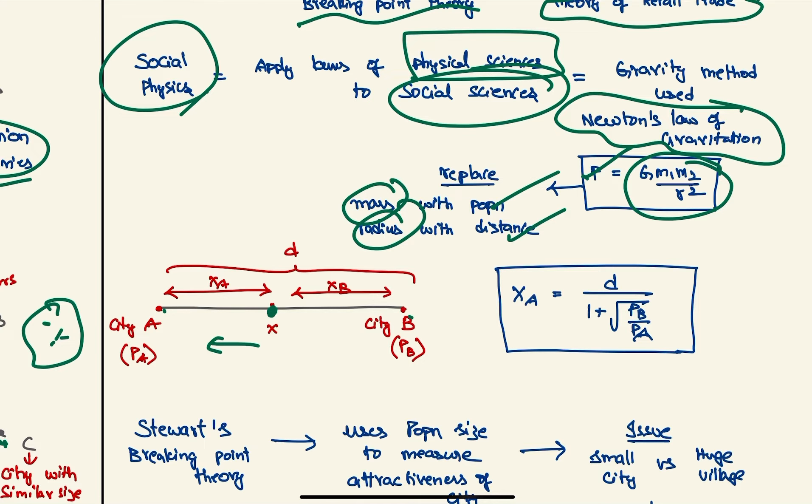So if there are two planets and there is a body here, the force exerted by these two planets would be equal. Similarly, there are two cities with population Pa and Pb; the influence exerted by both these cities would be similar here. So to get the distance we use this formula: that is d / (1 + √(Pa / Pb)). At this point the influence would be same, so a person living here would go here, and a person living here would go here.